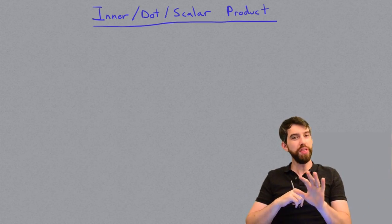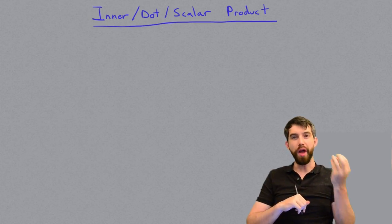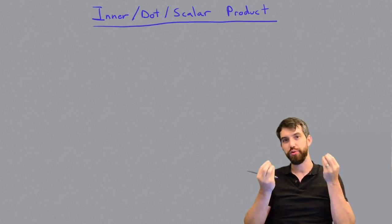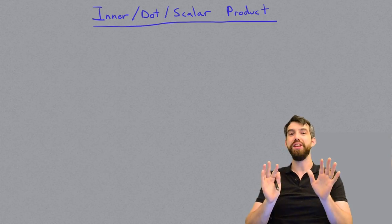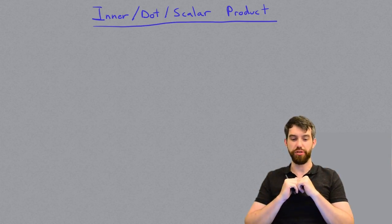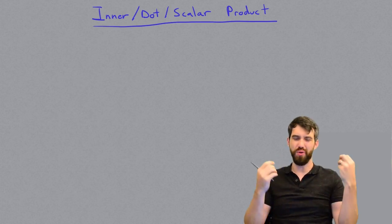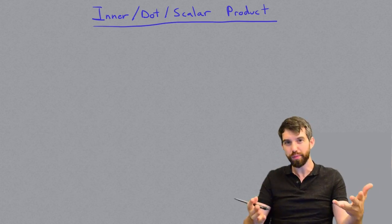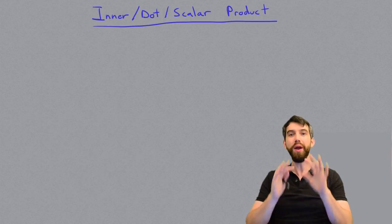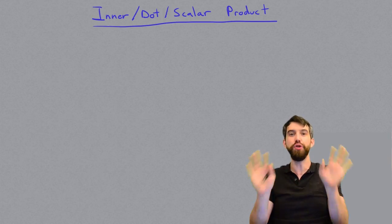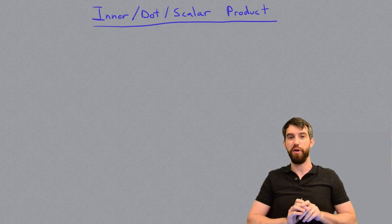But neither of those was really a notion of one vector multiplied by another vector. So I'm going to give a candidate for such a notion, something that we're going to call either the dot product, or the inner product, or the scalar product. These words are going to be used interchangeably, but what it means is you take two vectors and you're going to combine them in the following way.